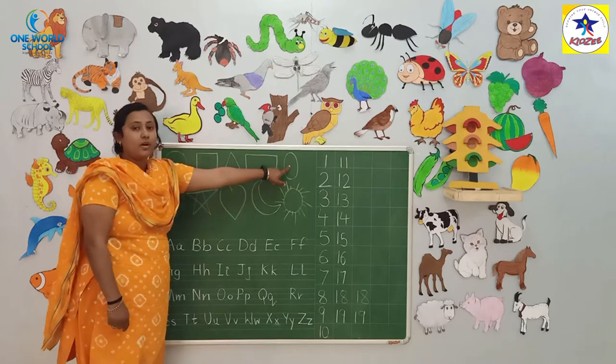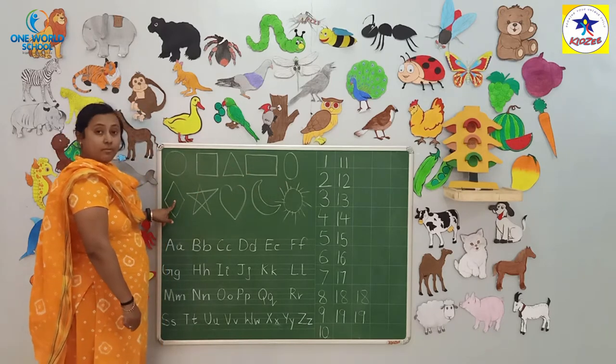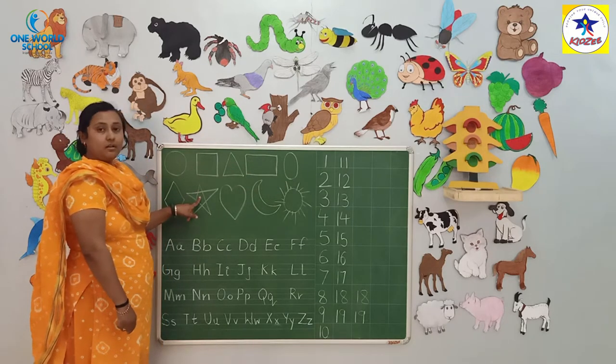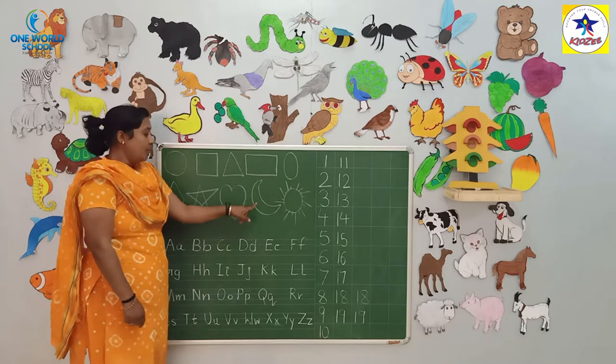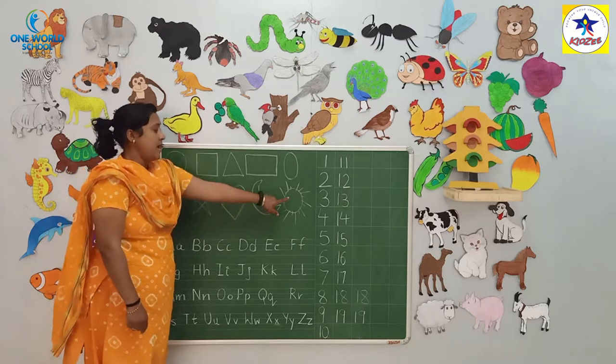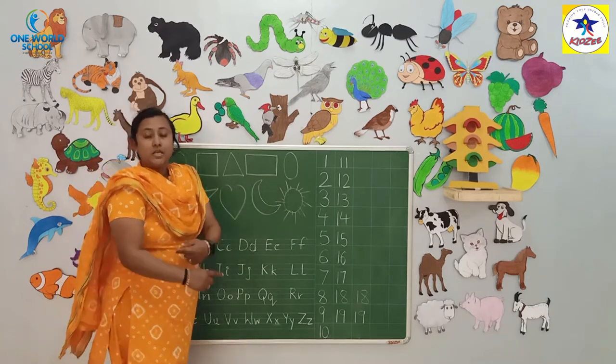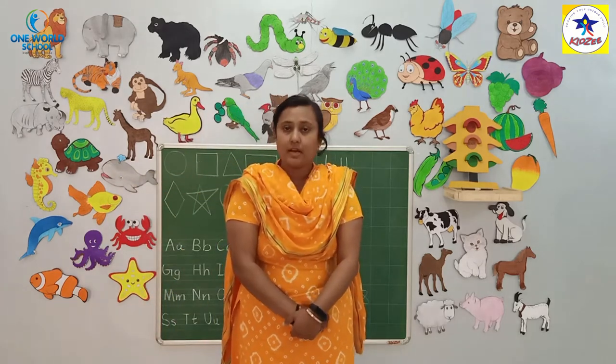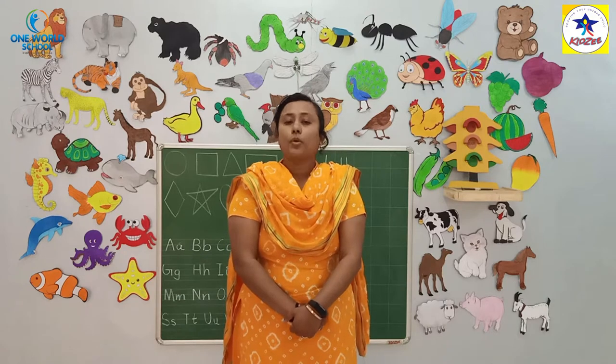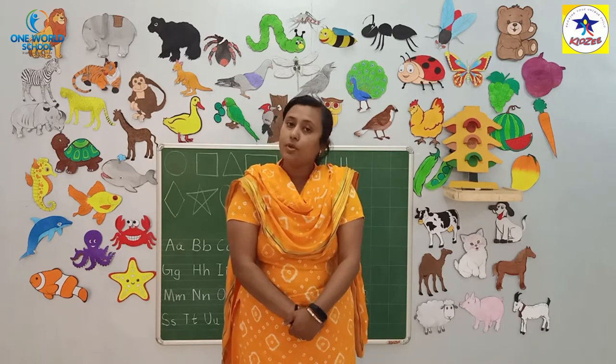Oval, Diamond, Star, Heart, Moon and Sun. अब आपको activity करना है। ठीके? अब आपको activity करना है। ठीके? अब आपको activity करना है।